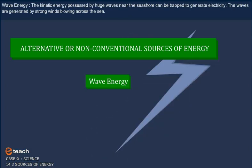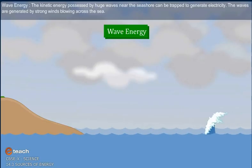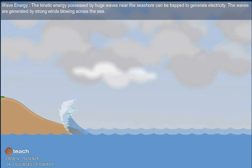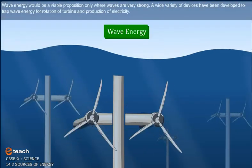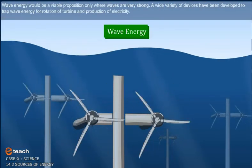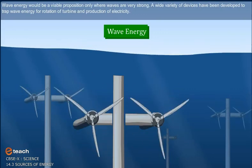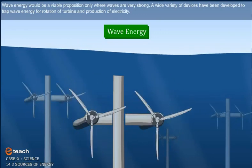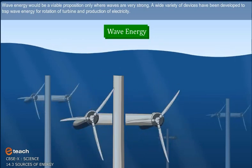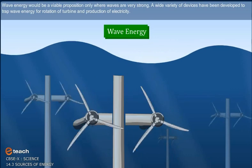Wave energy: The kinetic energy possessed by huge waves near the seashore can be trapped to generate electricity. The waves are generated by strong winds blowing across the sea. Wave energy would be a viable proposition only where waves are very strong. A wide variety of devices have been developed to trap wave energy for rotation of turbine and production of electricity.